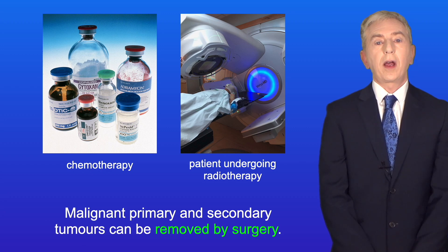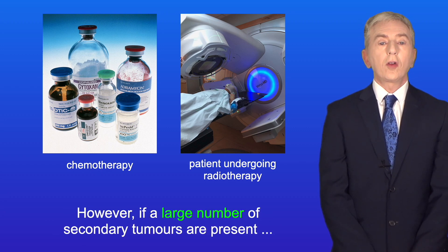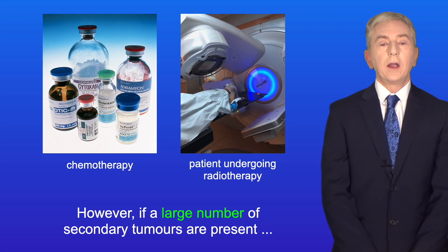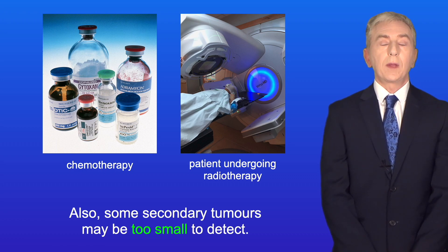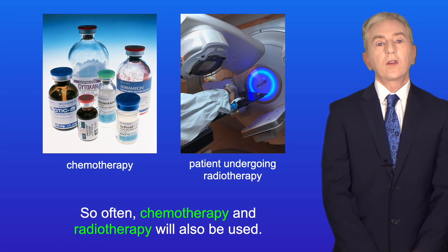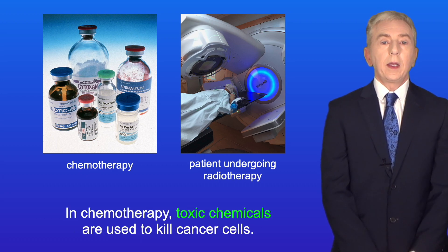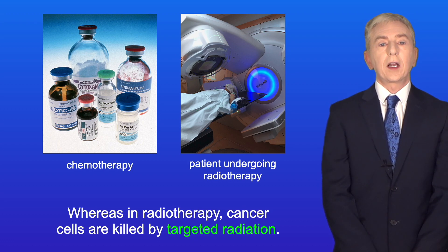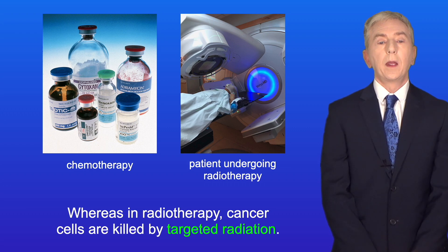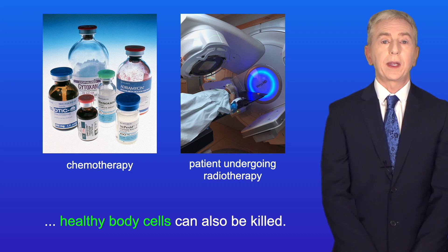Malignant primary and secondary tumours can be removed by surgery. However, if a large number of secondary tumours are present then surgical removal may not be possible, and some secondary tumours may be too small to detect. So often chemotherapy and radiotherapy will also be used. In chemotherapy, toxic chemicals are used to kill cancer cells, whereas in radiotherapy, cancer cells are killed by targeted radiation. However, in both chemotherapy and radiotherapy, healthy body cells can also be killed.